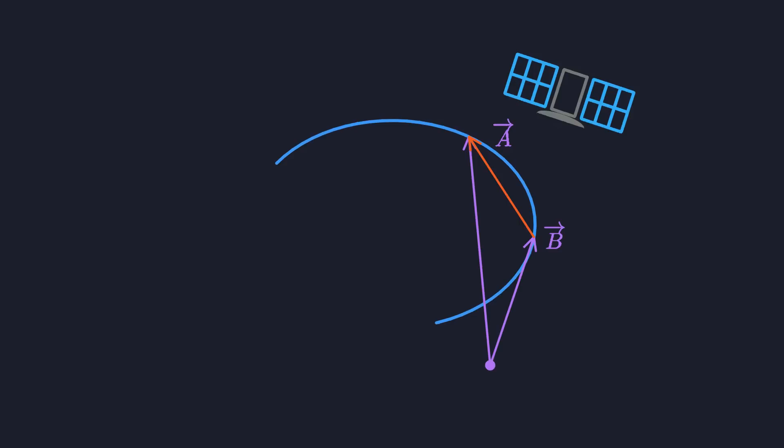So every time you decide to change your frame of reference, your perspective, your origin, you have to recalculate all your position vectors. But keep your eyes on the difference vector. It stays the same.